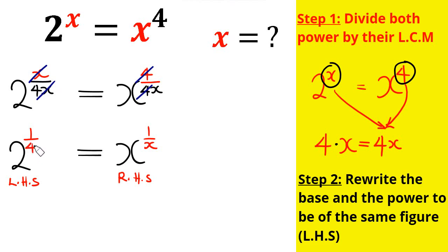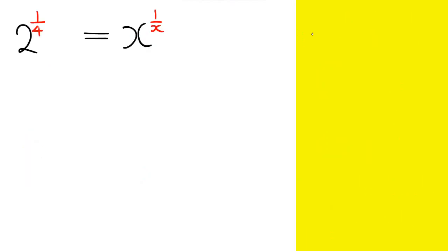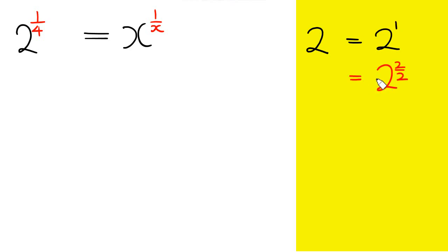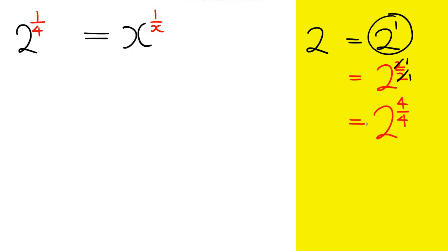We're going to do the same thing on the left-hand side, so that we have the same number as the base and the same number as the denominator of the power. We must note that every number is raised by the power of 1. For instance, 2 is the same as 2 raised by the power of 1, which I can also write as 2 raised by the power of 2 over 2, because 2 divided by 2 is 1.